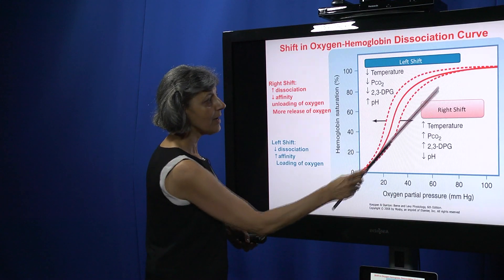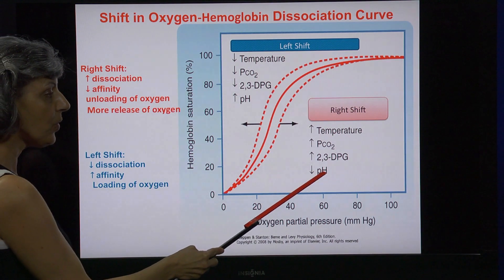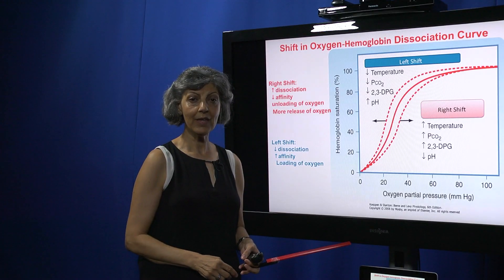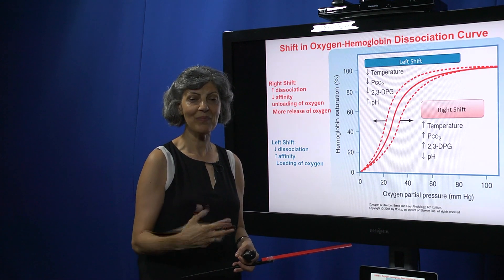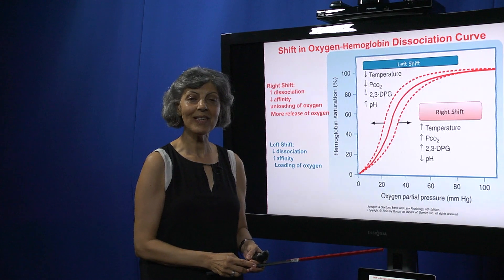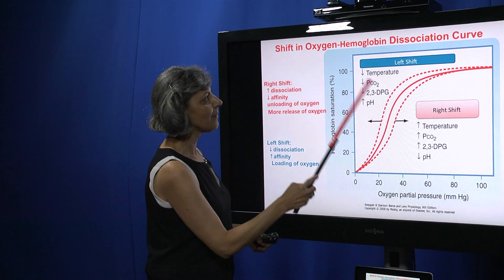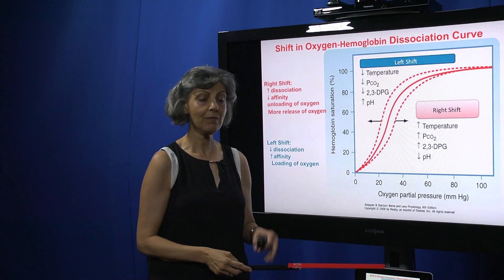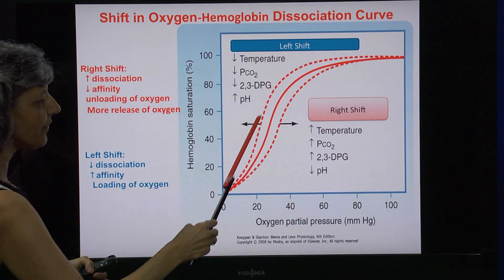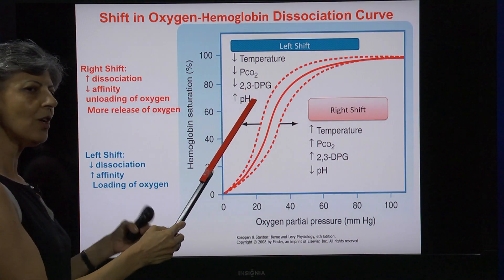The right shift occurs with high temperature, higher pCO2, or lower pH. Combining those three factors, they occur in a muscle that has been exercising — an exercising muscle has increased temperature, accumulation of carbon dioxide, and lower pH, so oxygen release is faster. The exact opposite — a left shift — occurs when less oxygen release is needed, reversing those three conditions, so the curve shifts to the left with more loading than unloading of oxygen.